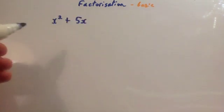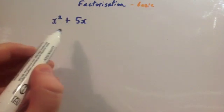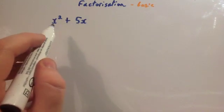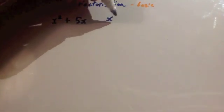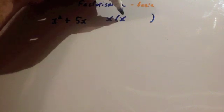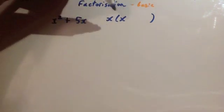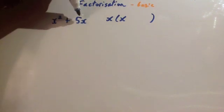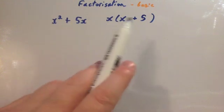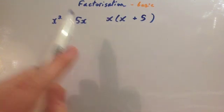Now let's look at something else. If you've got an expression like x² + 5x, the common factor for both terms is x — they're both divisible by x. So take x outside the brackets: x² ÷ x = x, and 5x ÷ x = 5. So the answer is x(x + 5). Let's check: x times x is x², and x times 5 is 5x. Correct.